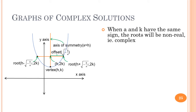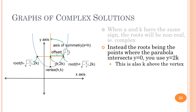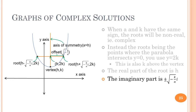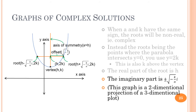We've already stated that when k and a have the same sign, the roots will be non-real — that is, complex. If you've never had complex arithmetic, please skip the next couple of slides. Otherwise, notice the parabola never intersects the x-axis, so the roots have h as the real part and an imaginary offset of plus or minus the square root of negative k over a times i. This graph is a two-dimensional projection of a three-dimensional plot.